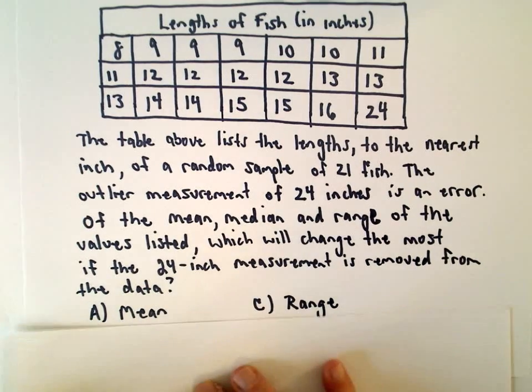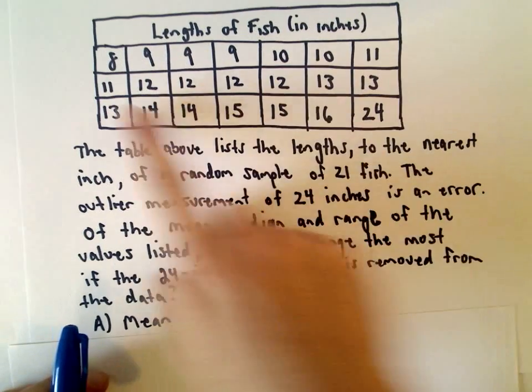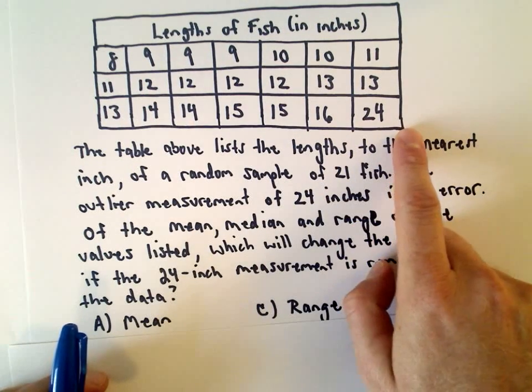The mean is just the average. You could compute the average by adding all of these up and dividing by the number of fish.